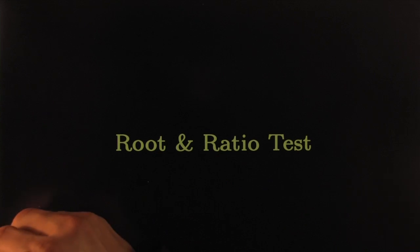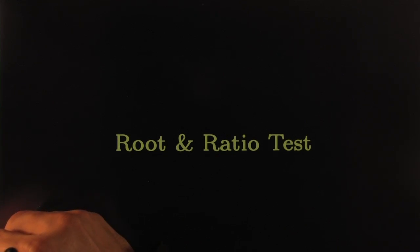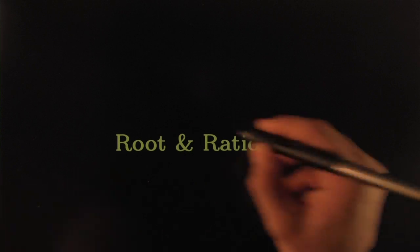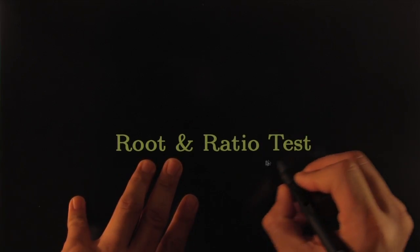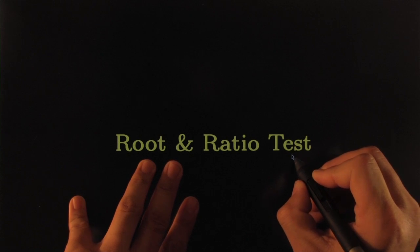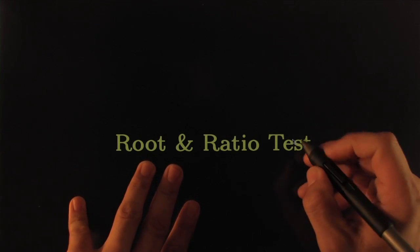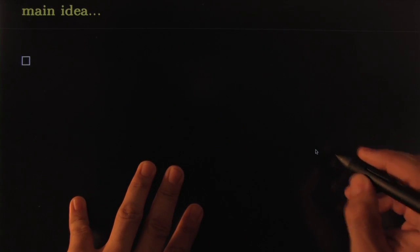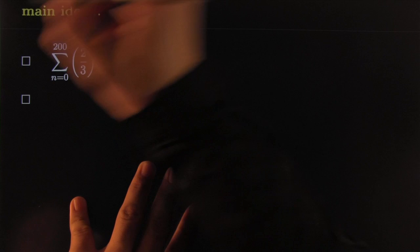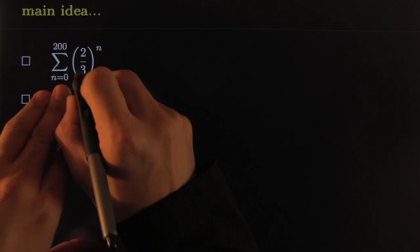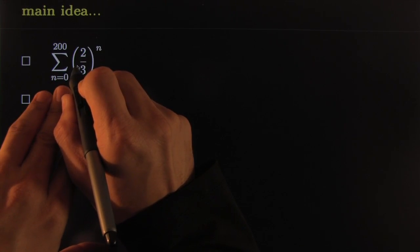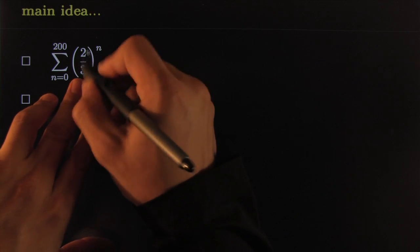All right, let's get this party started. Today we're doing a root and ratio test — some famous tests to determine whether or not a series converges or diverges. Let's get to the main idea. But before we get to the main idea, let me talk about series that look like this: they have a constant number and the exponent is the index.